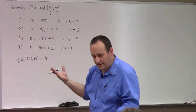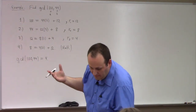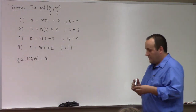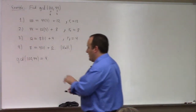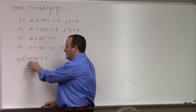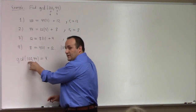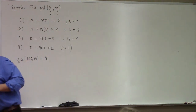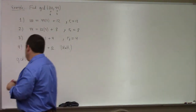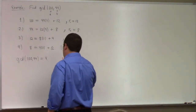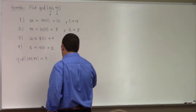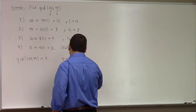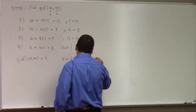That alone is the Euclidean algorithm. The extended Euclidean algorithm does a little bit more — it shows us how we can write 4 as an integer linear combination of 100 and 44. So 4 equals k times 100 plus l times 44. What are k and l, and how do you figure them out?